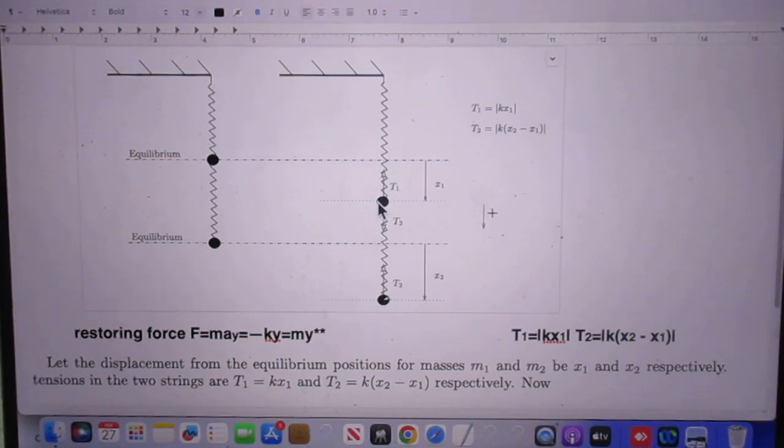The magnitude of T1 is k times x1, because the displacement is x1. I put here vertical bars, which means magnitude. When I apply it to this point later on, it will have a negative sign, because this is a restoring force.